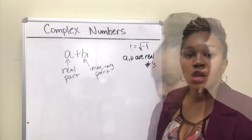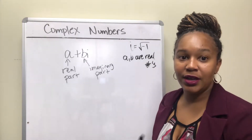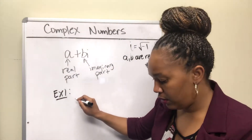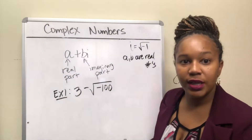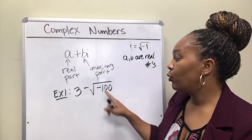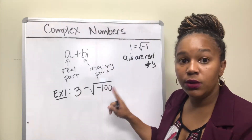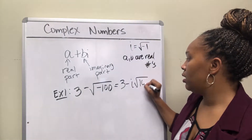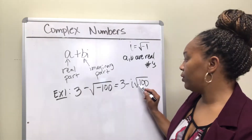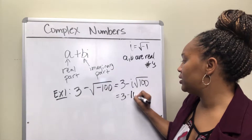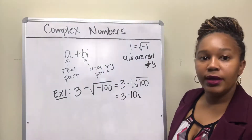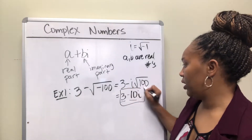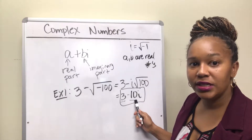We want to write numbers in complex form, which is a plus bi. Example one: write 3 minus the square root of negative 100 in complex form. Since we have a negative under the square root, we pull out the i, giving us 3 minus i times the square root of 100. The square root of 100 is 10, so that's 3 minus 10i. Here a is 3 and b is negative 10.